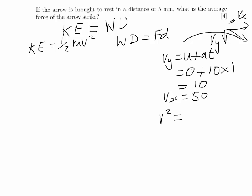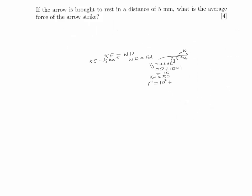So we need to use Pythagoras' theorem. So we do 10 squared plus 50 squared, and that will give us our resultant velocity squared, which is, so V squared is 2,600. I'm going to leave it just as V squared for the moment because we're going to use it in our kinetic energy equation, which is half MV squared.